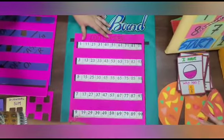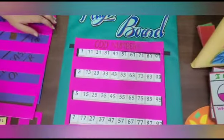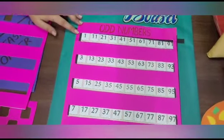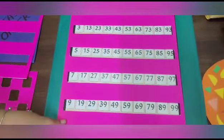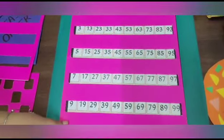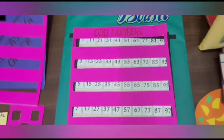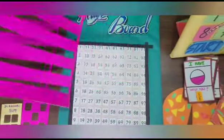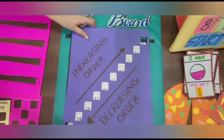Our next cutout is for odd numbers. We can ask the student to place the cutout on the magic board, and the student will be able to read all the odd numbers between 1 to 99. There is another cutout for increasing order — we can place it anywhere and ask the student to read all the numbers in increasing order.